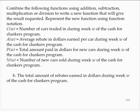So if we take the number of cars and multiply it by the average rebate, that would give us the total amount of rebates. We would have C of W times A of W, which can also be written as C times A of W.